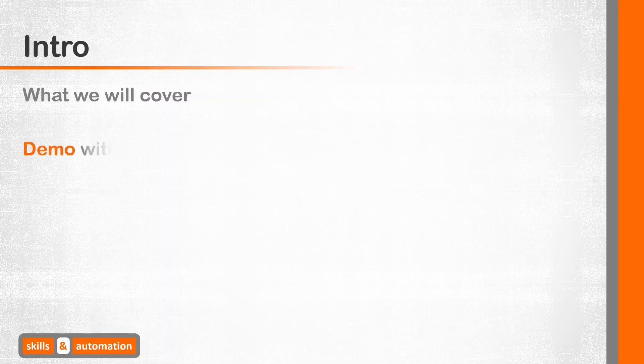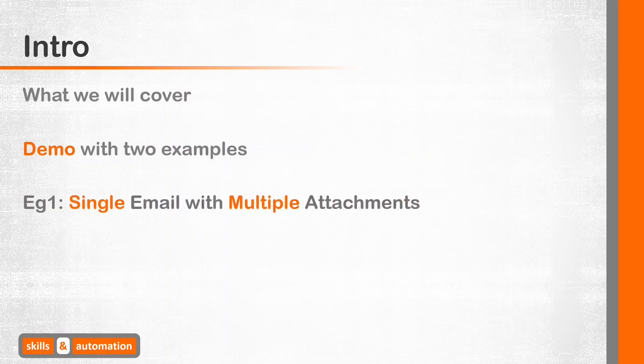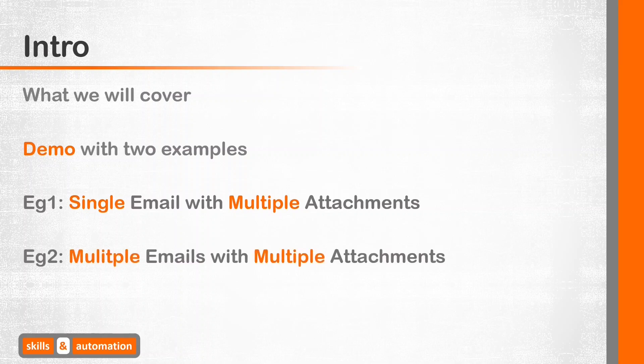In this session, we will first look at a demo to visualize what we will be building. Next, we will look at a simple example where we create just one email with multiple attachments. Last, we will look at a more complex example where we send multiple emails with multiple attachments each. We will use advanced filters through VBA in this example, which should be interesting.